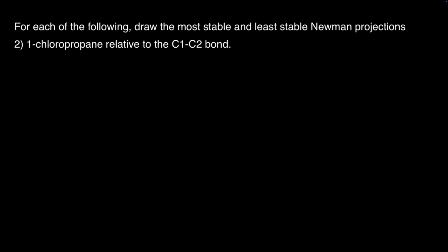For our next example, we are still going to draw the most stable and least stable Newman projections. This time it will be 1-chloropropane relative to the C1-C2 bond. First, we will draw the skeletal structure for 1-chloropropane and label the carbons in the parent chain. This molecule has 3 carbons with chlorine on C1. We will be looking down the bond between C1 and C2, with C1 in the front and C2 in the back. I need to convert this skeletal structure into a wedge and dash model, so using the first and second carbon, I will find the base for the wedge and dash model.